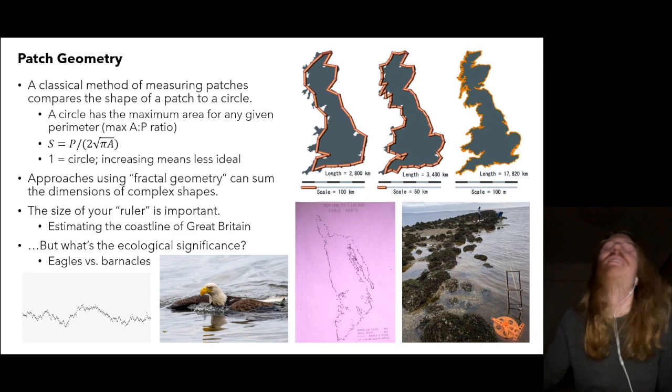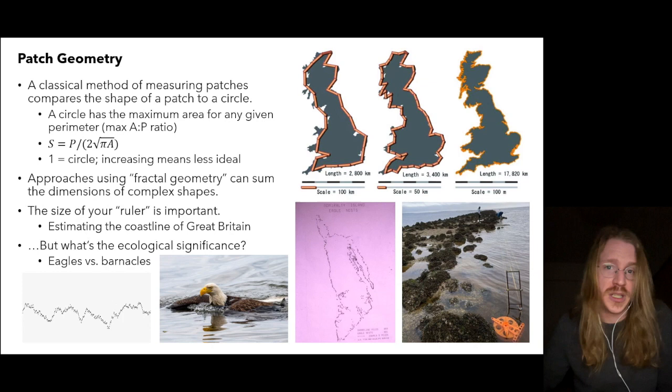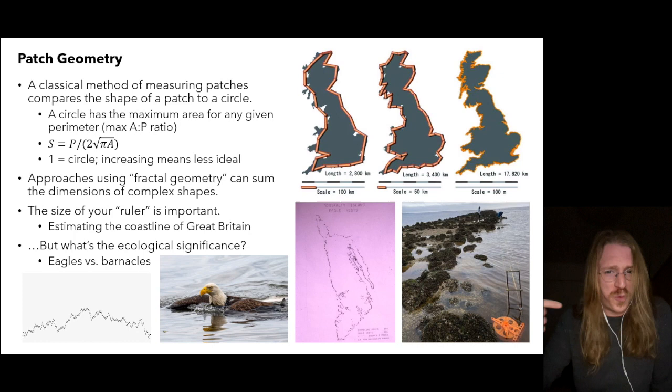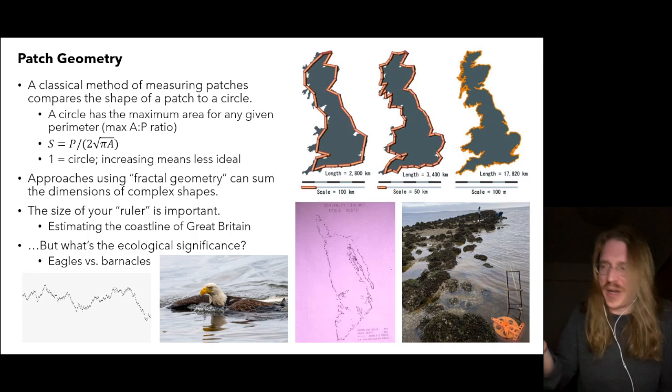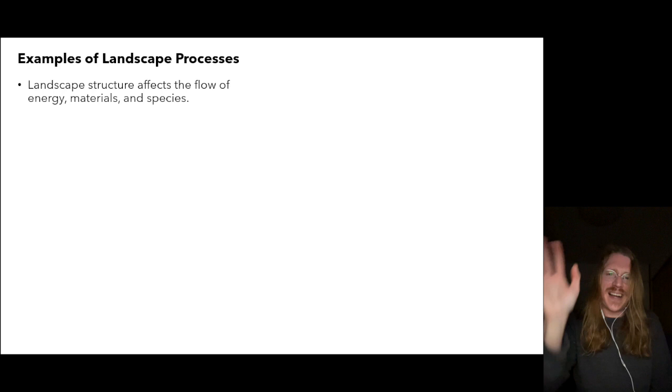What matters is how individual organisms perceive and utilize their space — how they measure their geometry. And it matters when we apply this idea to conservation. Think about the Exxon Valdez oil spill: when allocating cleanup resources per mile of coastline, should we think about the eagles or the barnacles? What's our perspective? It's time to start linking landscape structure and function.